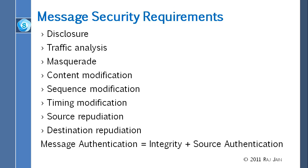Other threats include: masquerade, meaning somebody else cannot become you; content modification, so nobody should be able to change the content; sequence modification, where messages cannot be reordered; timing modification, so a message cannot be delayed; and replay attacks. Source repudiation is also important — we want to make sure that the source cannot go back on its word. If the source sends a message, they cannot later say they didn't send it. That's where signatures come in.